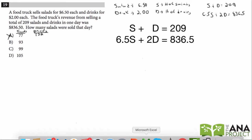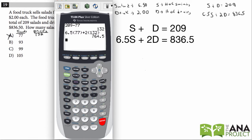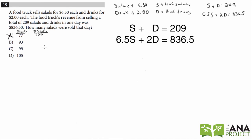Let's try this one. If there were 93 salads, there would be 209 minus 93 drinks. 116 drinks.